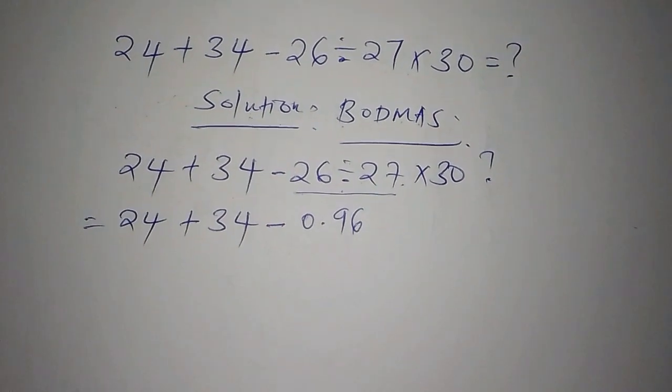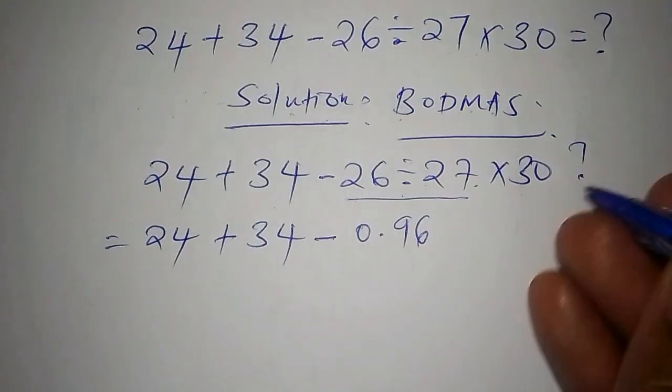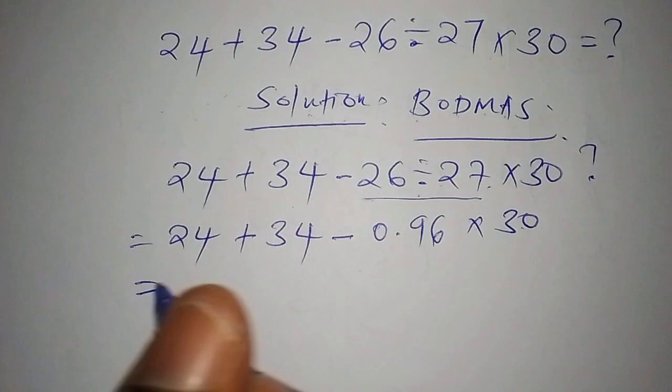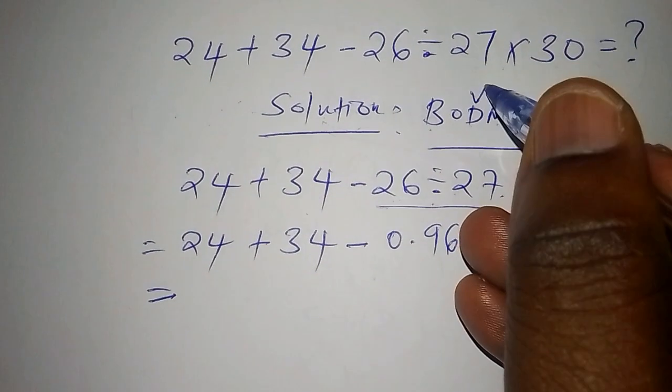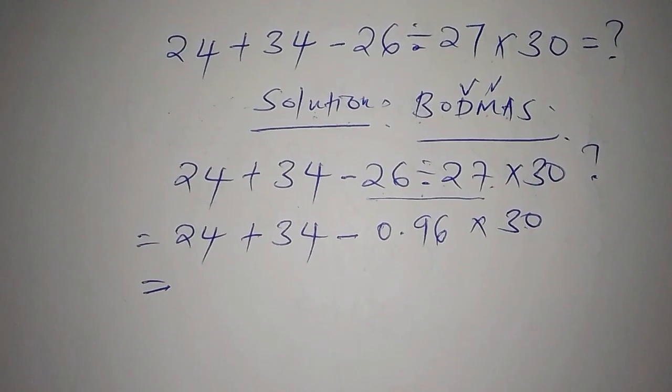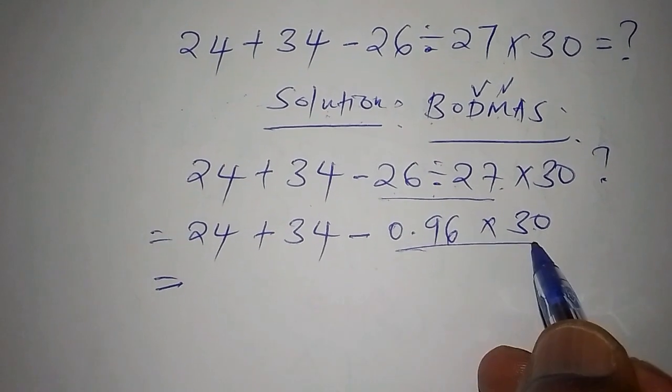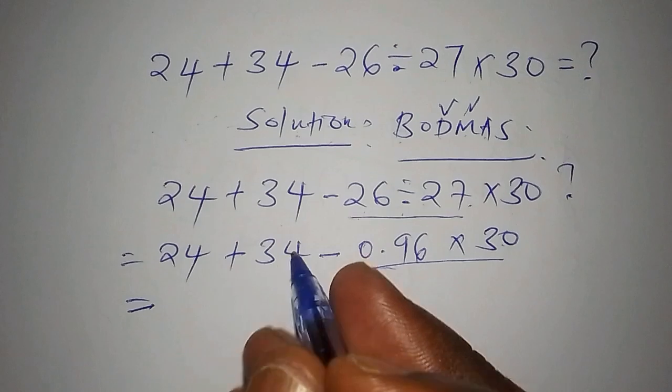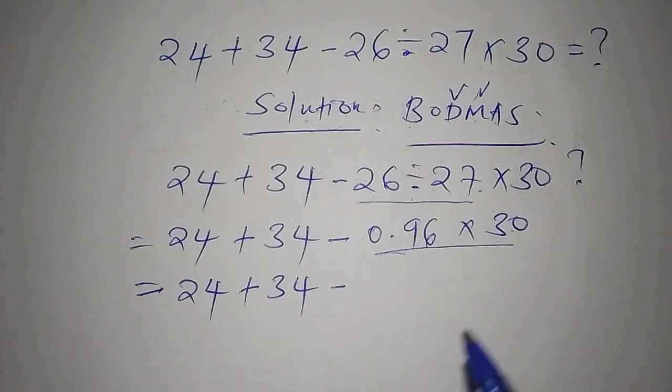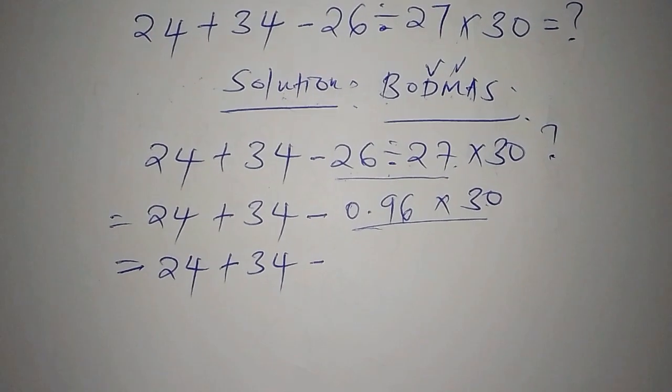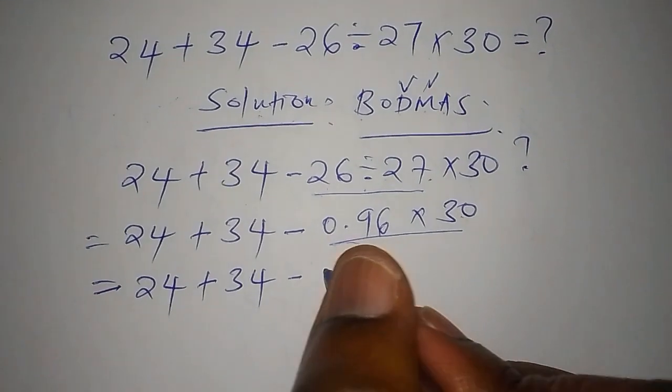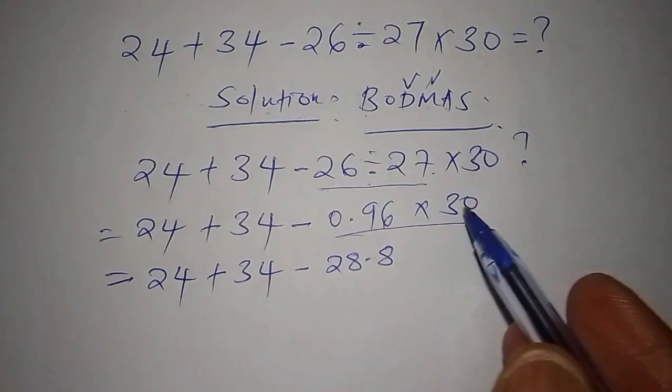So after writing 0.96, we are going to multiply it by 30. So our next operation shall now be, we are now done with the division, we are heading straight to the multiplication sign. So we shall say we have to follow that procedure, whereby we say this one is 24 add to 34, then we subtract 0.96 multiply by 30. And 0.96 multiply by 30, we shall get the answer as 28.8.